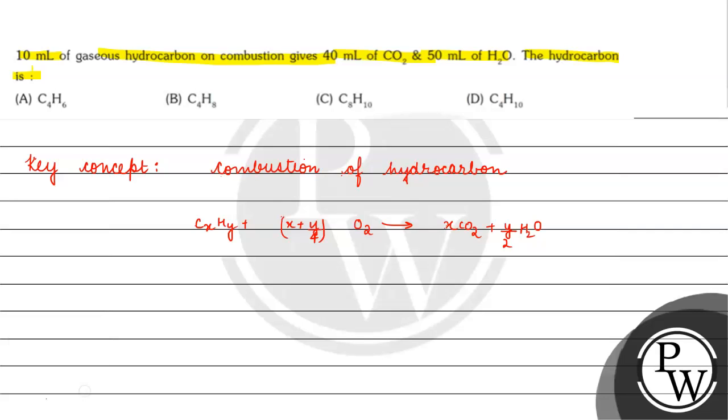If we talk about it, what can we have x and y value? Right? Look, let's read the first thing that 1 volume of CxHy, we get x volumes of CO2. Right? Now, if we have 10 ml of CxHy, then we get 10x ml of CO2.